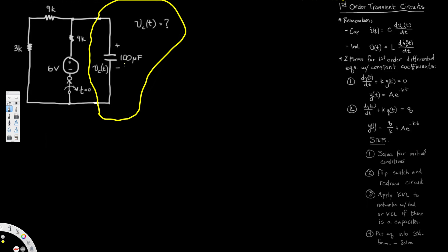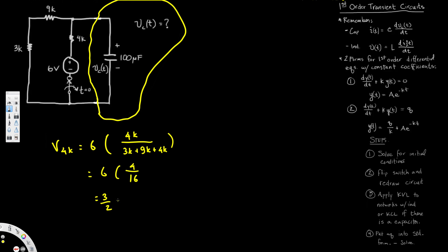We need to find the voltage across the 4k resistor using the voltage divider equation. V across 4k equals 6 times 4k divided by the total resistance, which is 3k + 9k + 4k = 16k. That gives us 6 × 4/16 = 6 × 1/4 = 3/2 volts across the 4k resistor.